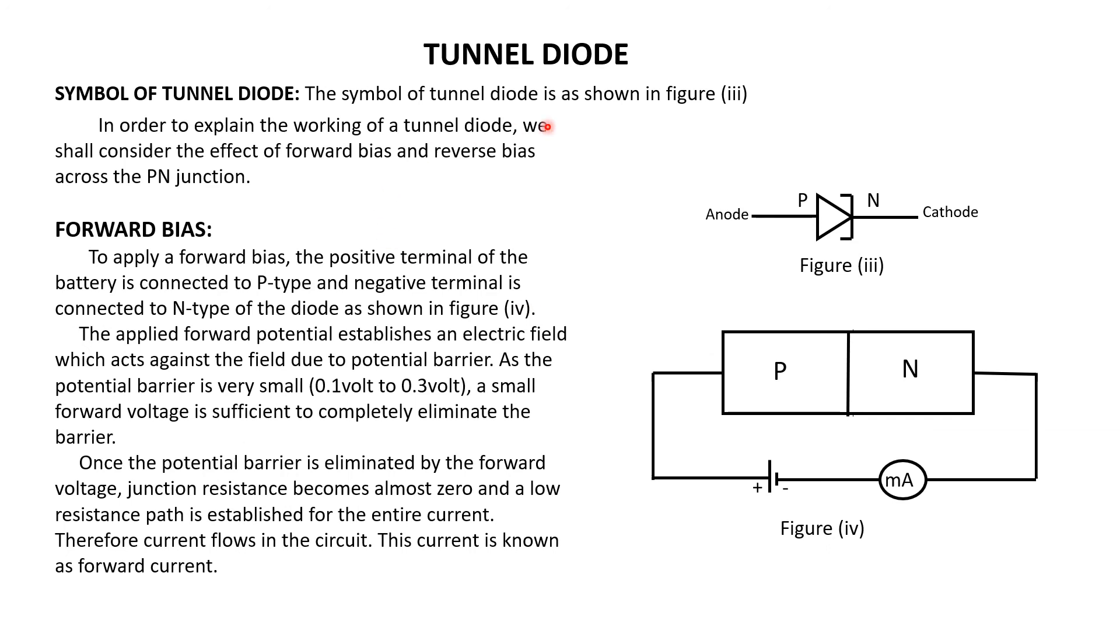Coming to tunnel diode, the tunnel diode is a PN junction diode which is heavily doped. The circuit symbol of tunnel diode is just like a PN junction diode but there is a change in the symbol of the cathode.